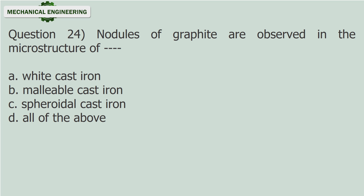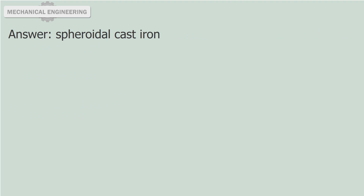Question 24: Nodules of graphite are observed in the microstructure of — (fill in the blank). A. White cast iron. B. Malleable cast iron. C. Spheroidal cast iron. D. All of the above. Answer: Spheroidal cast iron.